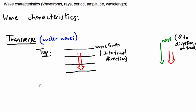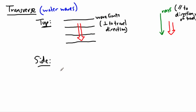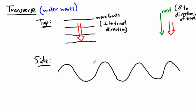Now we could also look at this from the side. If we look from the side, we draw the wave going up and down. In mathematics, we could say this is sinusoidal because we could use a sine curve or even cosine to model this graph. Down here we have things called troughs — that's what they're often called.